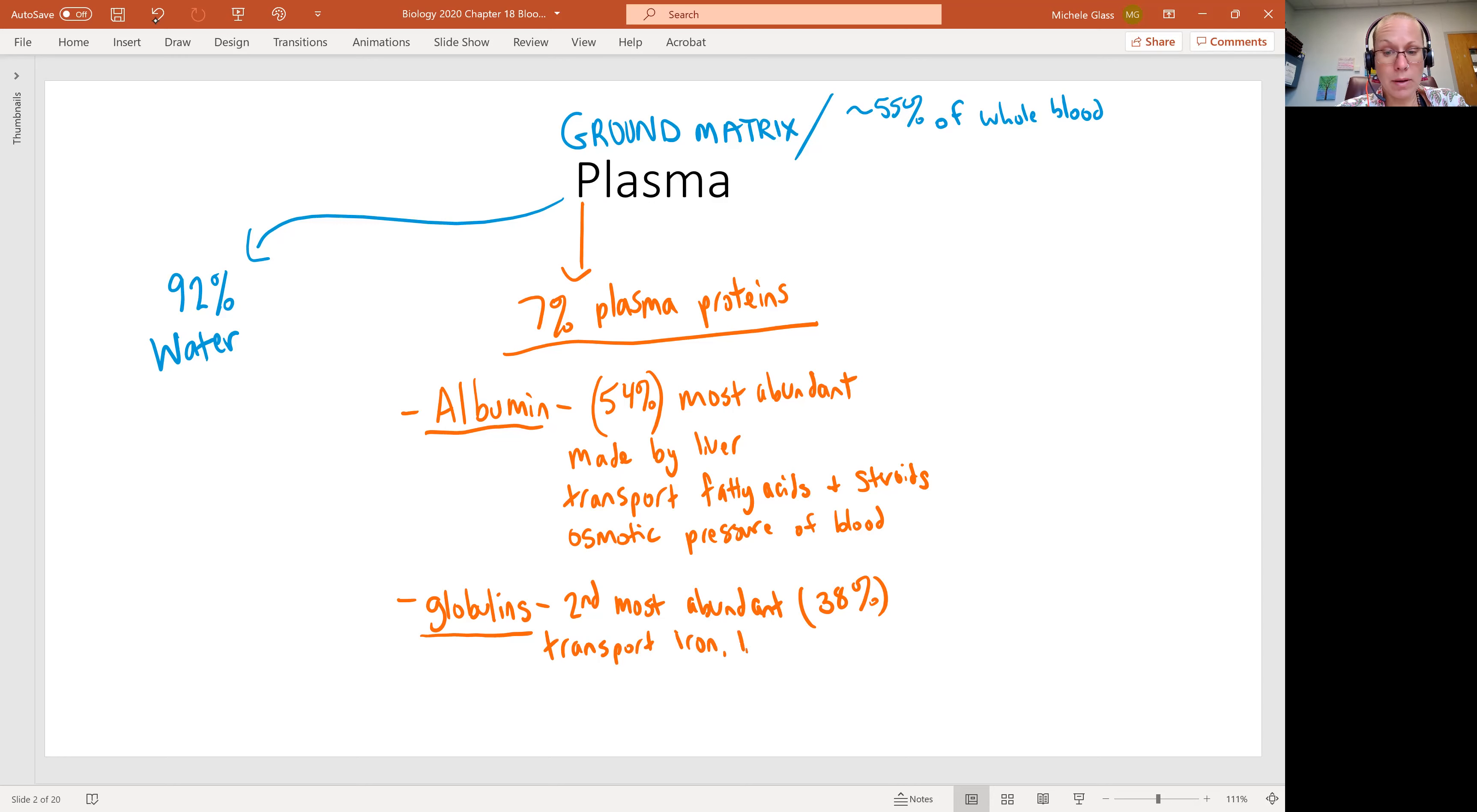They're going to transport other lipids and some fat soluble or lipid soluble vitamins, specifically A, D, E, and K. The globulins will also be contributing to the osmotic pressure. But probably the most important thing is that our antibodies will be globulins. We can talk about them as antibodies, or we can call them immunoglobulins, abbreviated as IgS or IGs.